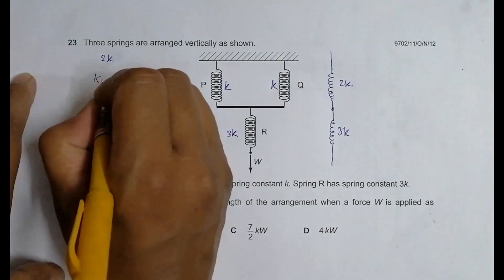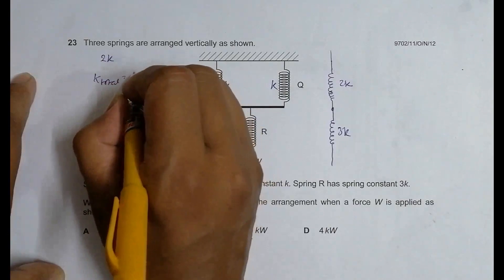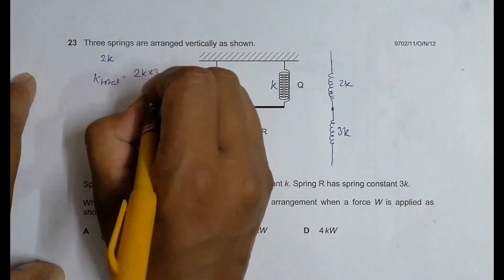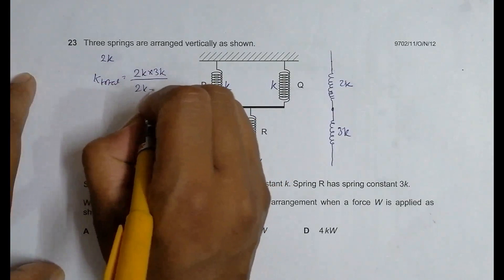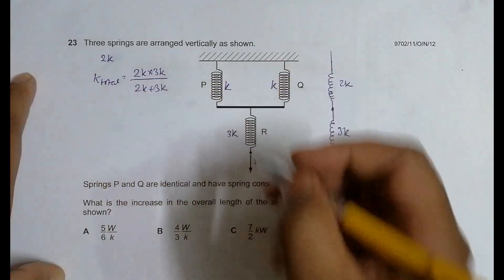So K total should be equal to 2K into 3K divided by 2K plus 3K. So many people when I dealt with similar questions, they asked me how does this relation come into existence.